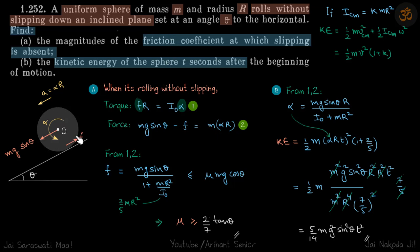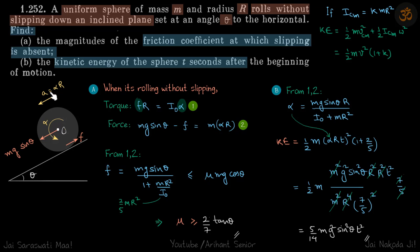We are given a uniform sphere kept on a rough inclined plane. We need to find the friction coefficient at which slipping is absent. In all such problems, we write F = ma and torque = I·alpha. Let's say the friction force F is upwards, mg·sin(theta) acts at the center downwards, and the acceleration is alpha·r.